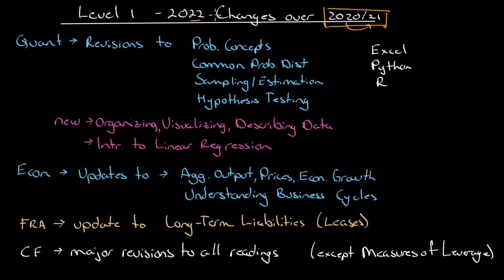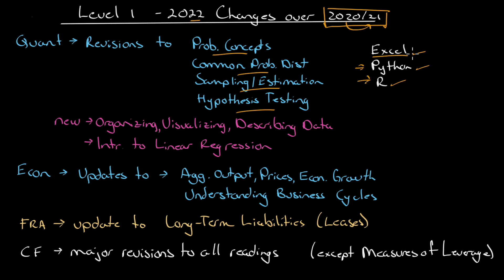At Level 1 Quant, there are major revisions throughout except for time value of money — major revisions in probability concepts, common probability distributions, sampling and estimation, and hypothesis testing. Throughout the readings there is Excel functionality given, as well as Python and R code.